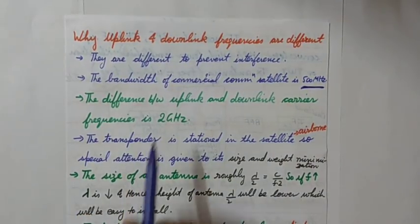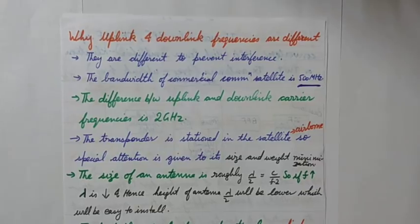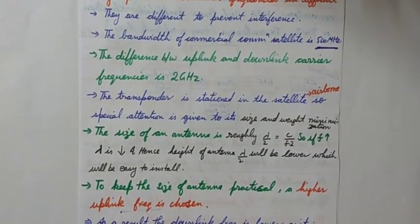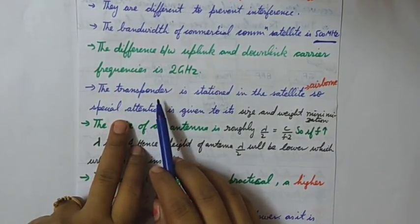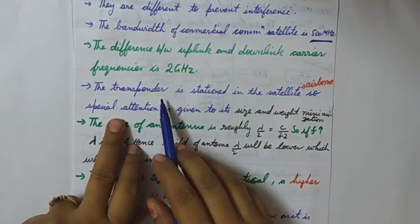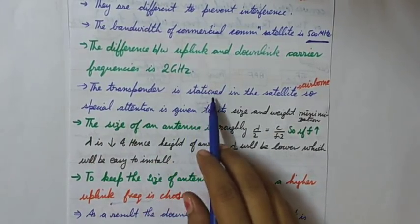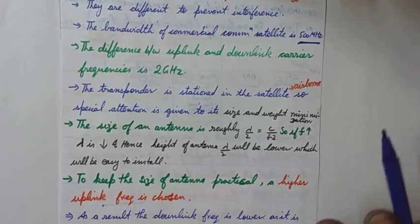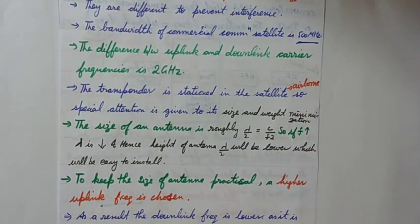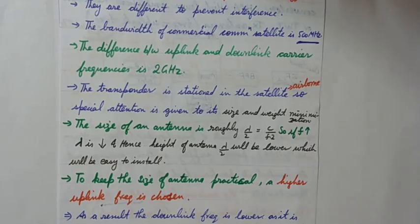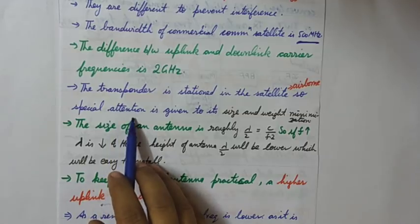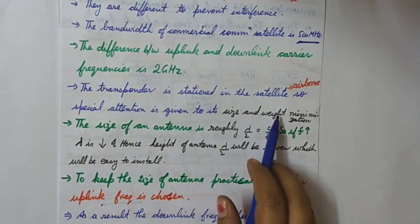And the difference between the uplink and downlink carrier frequencies is 2 gigahertz. Now coming to the main answer to this question is that the transponder which is stationed in the satellite, and the satellite is in the air in space, so the focus is to make size and weight of things or the surface as much possible as can be.